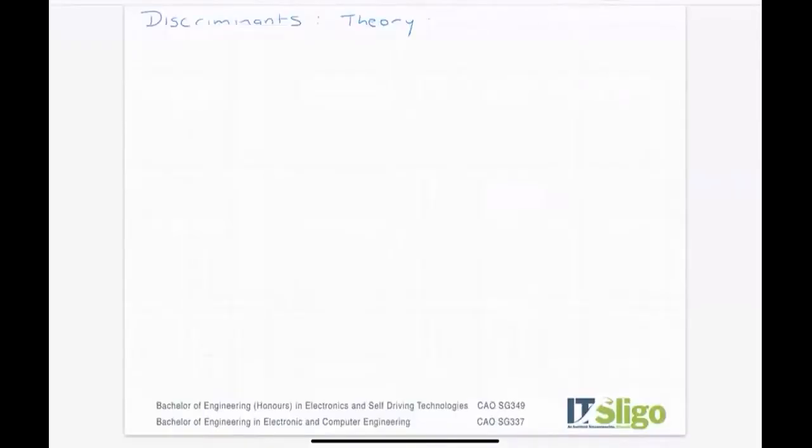If we look at discriminants, we are really talking about the minus b formula. If you remember the minus b formula, that is equal to minus b plus or minus the square root of b squared minus 4ac all over 2a. It's this piece here under the square root sign that we call the discriminant.